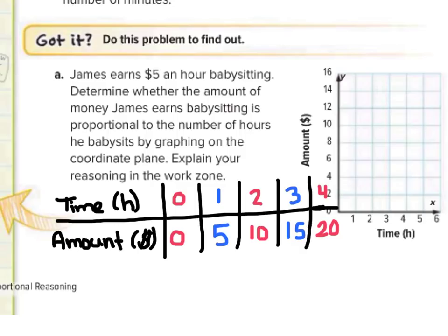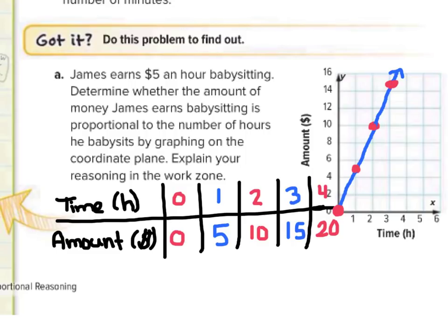Now we get to graph this. We show (0, 0) for hours and money — right here. Then (1, 5) for 1 hour and $5 — that's between 4 and 6 right here. Then (2, 10) for 2 hours and $10. Our graph doesn't go up to 20 so we stop there. We can connect these points, and the points (0,0), (1,5), (2,10), and (3,15) are all on this line.